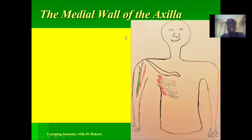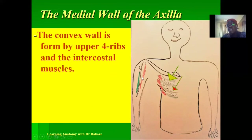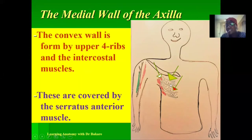The medial wall is the region close to the body, and it is formed by the upper four ribs and their corresponding intercostal muscles. Covering these is the serratus anterior muscle, which helps cover the ribs and intercostal muscles in this region. These three structures together form the medial wall of the axilla.